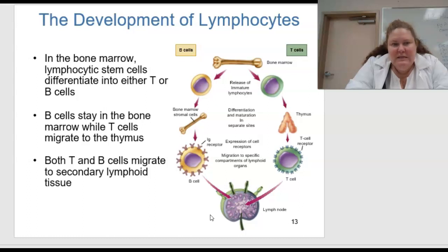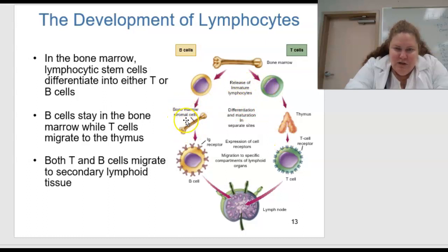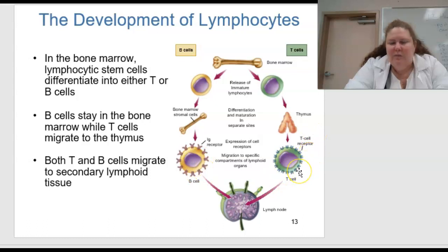This is figure 15.3 — the development of lymphocytes. In the bone marrow, the lymphocytic stem cells differentiate either into T or B cells. B cells stay in the bone marrow while T cells migrate into the thymus. Both T and B cells migrate to the secondary lymphoid tissue. B cells mature in the bone marrow, T cells mature in the thymus — hence the expression of cell receptors occurs — and then they migrate to specific compartments of the lymphoid organs, converging in the lymph node.